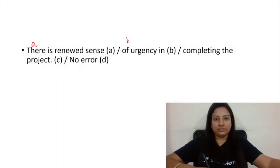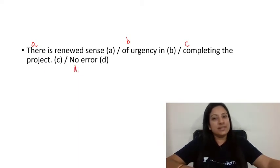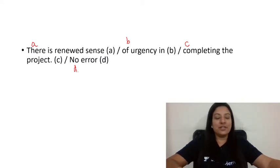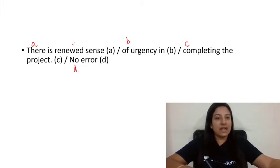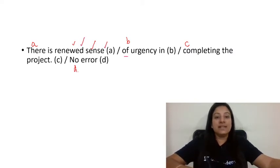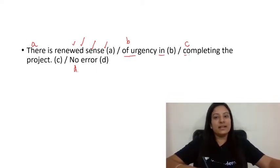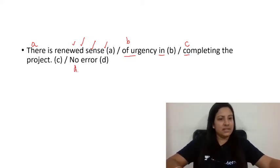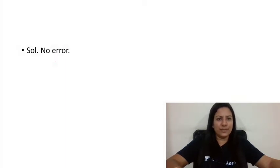Question number 2: 'There is renewed sense of urgency in completing the project.' The correct answer is option number D — there is no error in the sentence. 'Renewed' is a past participle modifying 'sense', which is a noun. 'Sense of urgency' means when you need to complete a task quickly. 'In completing the project' indicates there is now an urgency to finish it. There was no error as such.